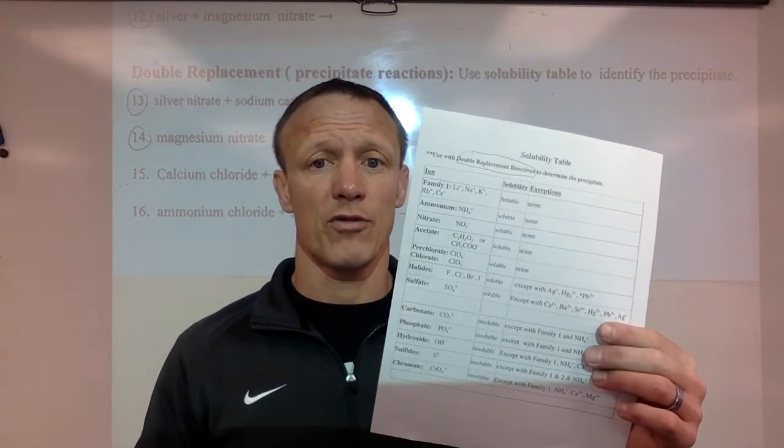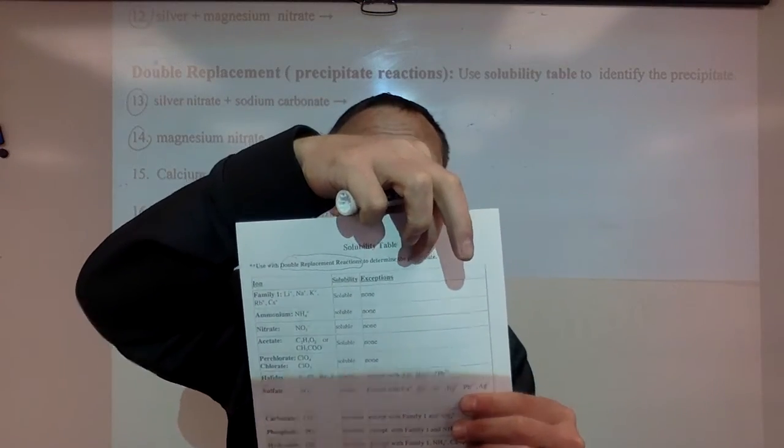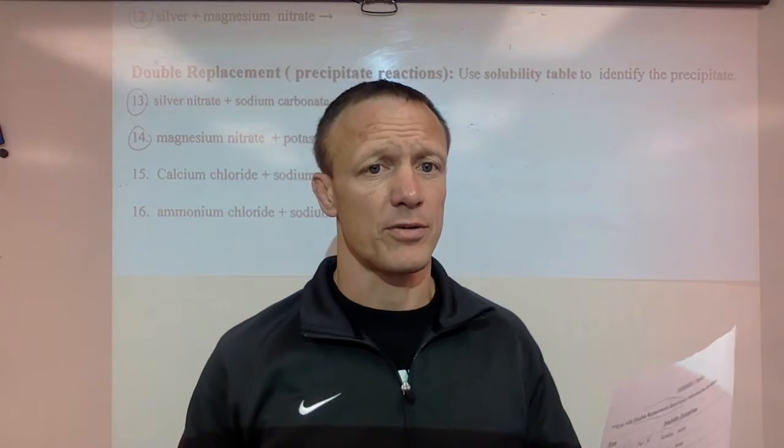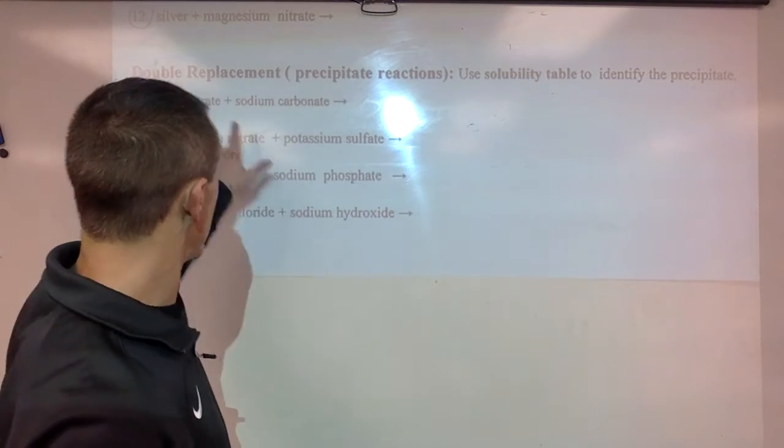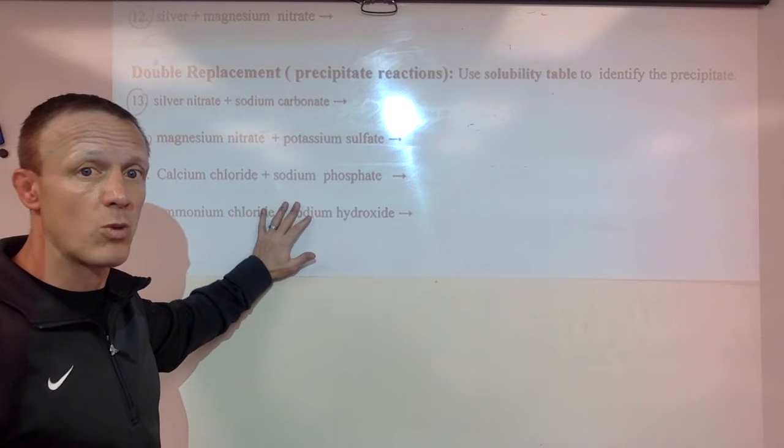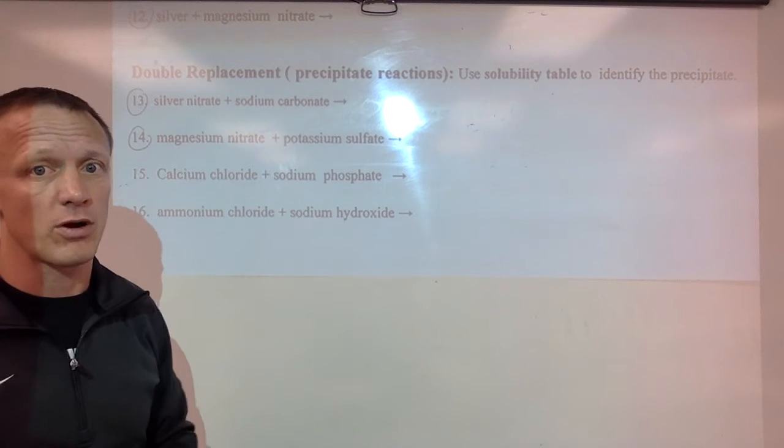We need to use our solubility table here for doubles to predict the precipitate. So we're trying to figure out what is the insoluble thing. The precipitate is the insoluble thing that will not dissolve that's made in the reaction. Now the things reacting, these are always soluble. They're always dissolved in water. So these reactions only occur in water. Water is not part of the equation but all of these things would be dissolved in water for them to happen.